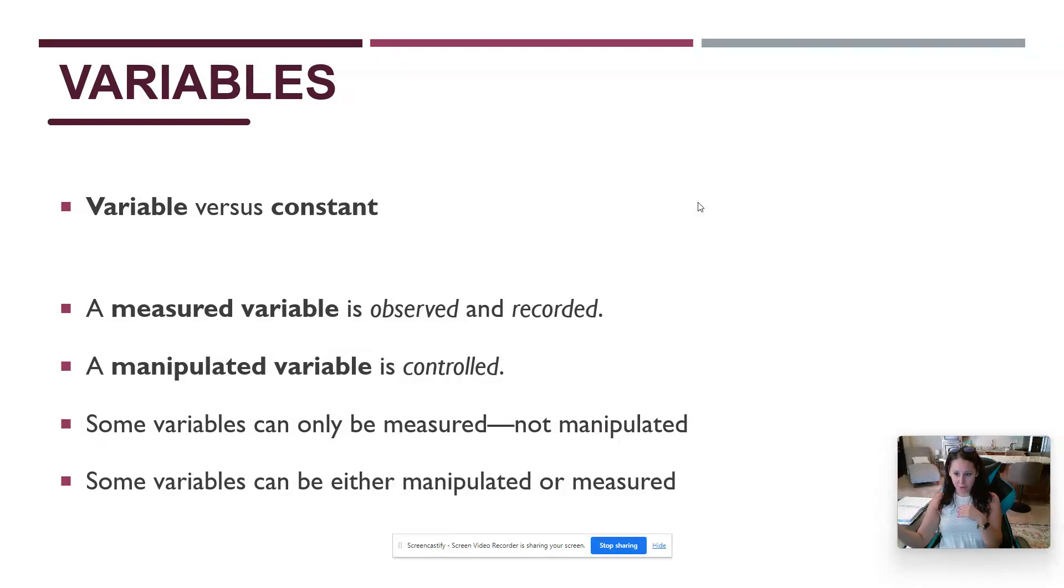A variable, kind of like is in the word, is a number that's going to vary between different people. So in the example of marriage length, if I say I'm only interested in couples that have been married for seven years, the seven years is my constant. But if I'm asking them, how many children do you have? How many hours a week do you spend together? Things of that nature, those are all variables. Those are answers that are going to differ from person to person.